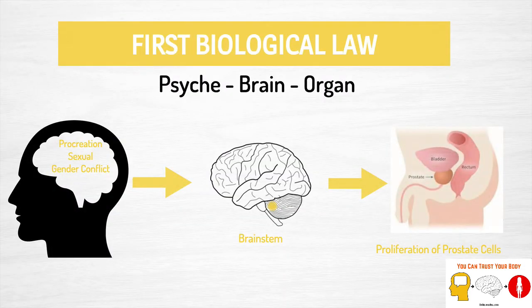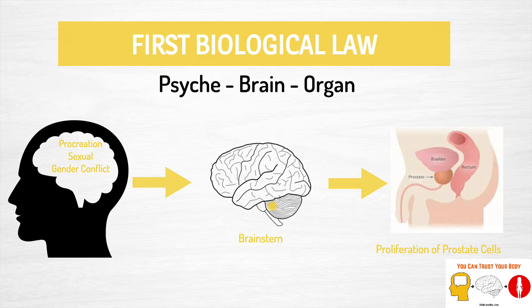The first biological law of GNM states that when a conflict occurs, it happens simultaneously on the level of the psyche, the brain, and the organ. When the conflict is perceived by the subconscious mind of the individual, immediately there is a measurable impact in the area of the brainstem right in the center. And then there is proliferation of prostate cells — that is what is happening at the tissue level. We are going to increase the number of prostate cells.